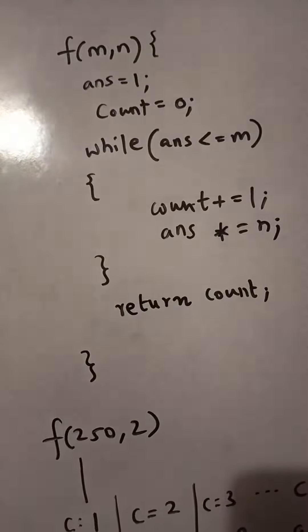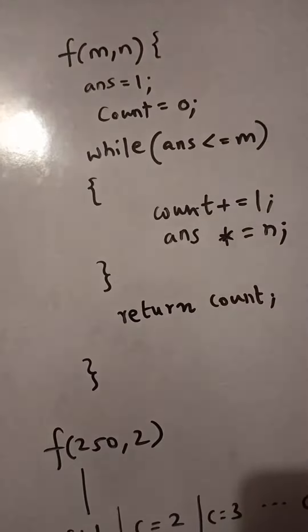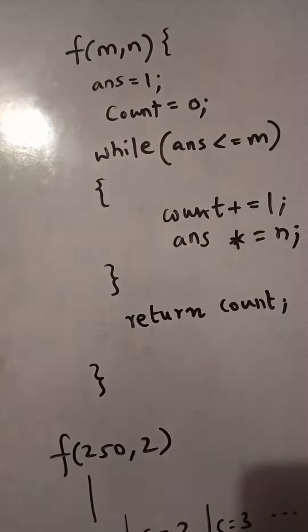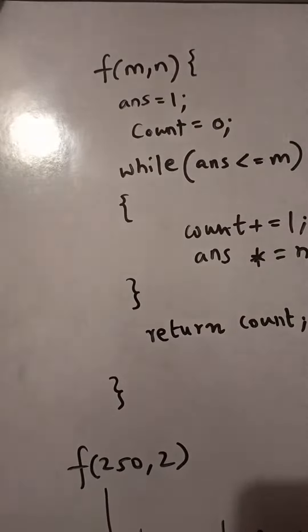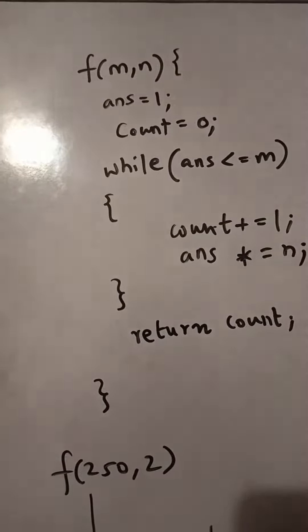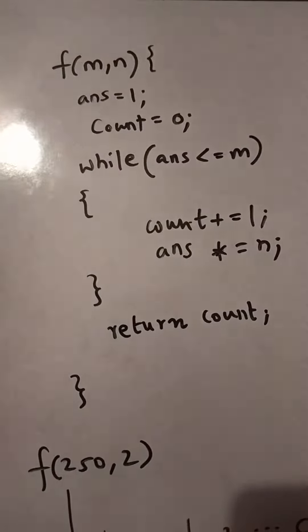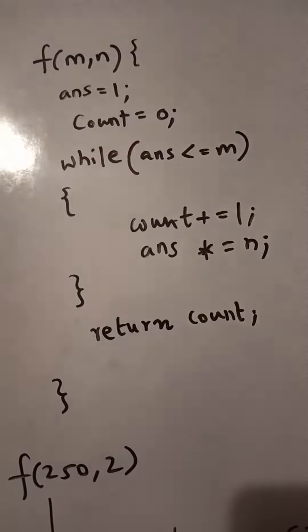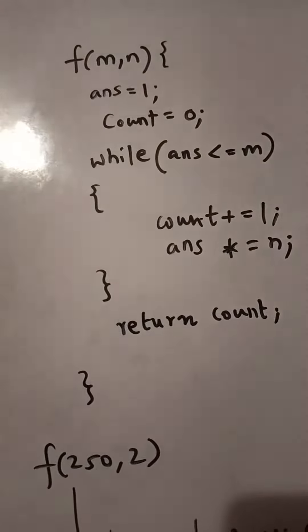Hello guys, in this video I will tell you how to solve this question. A function is given with parameters m and n. ans is 1, count is 0. While ans is less than or equal to m, count is incremented by 1 and answer is multiplied by n. At last we return count.